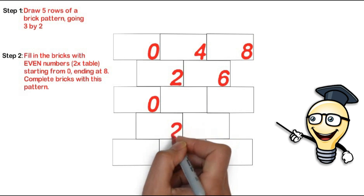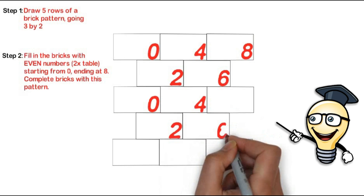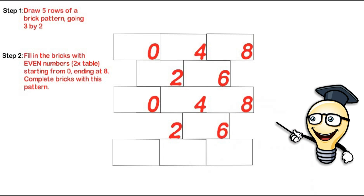And we repeat that pattern in the bricks below. 0, 2, 4, then 4, then 6, then 8. And then in the last row, since there are 3 bricks, we can notice that only 0, 4 and 8 appear in that row. So we just fill that in with 0, 4 and 8.